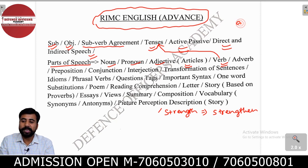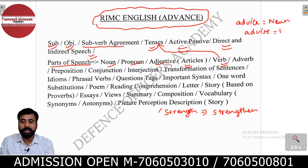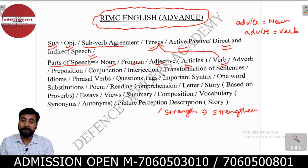For example, 'advice' — A, D, V, I, C, E — this is a noun. If I say 'advise' — A, D, V, I, S, E — that is the verb form. You should know the difference between noun and verb forms of such words.